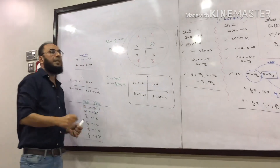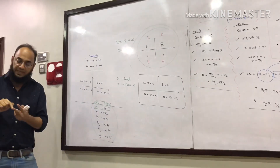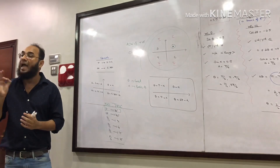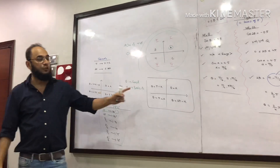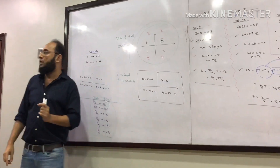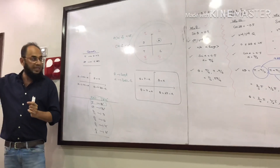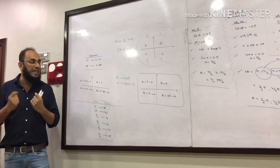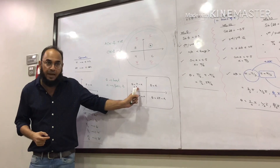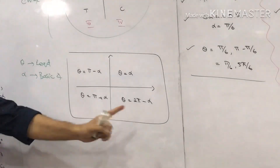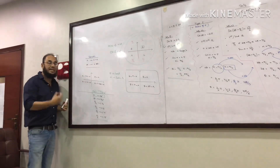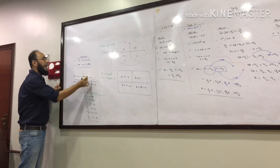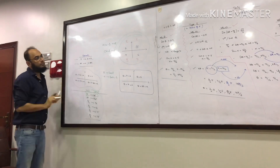The relationship between theta and alpha: theta is the required angle in any question, while alpha is the basic angle — the acute angle with the x-axis. First quadrant: theta equals alpha. Second quadrant: theta is pi minus alpha. Third quadrant: theta is pi plus alpha. Fourth quadrant: theta is 2pi minus alpha. Since we are dealing with radians, pi is 3.142 and 2pi is 6.284.